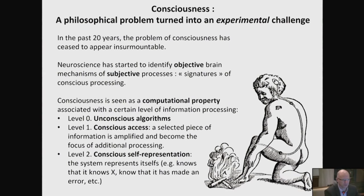One of the difficulties is that there are many different meanings of consciousness. I was trying to make some basic distinctions. We are now completely accustomed to the idea of information processing without consciousness — in algorithms, in our machines, starting with Turing and Shannon. We know that information can be processed mechanically. There is a whole level of unconscious algorithms, and research in human subjects has shown very clearly that there is a lot of computation that can occur without consciousness.